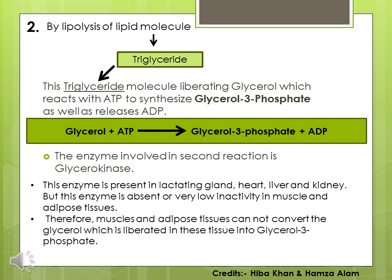The second way by which glycerol 3-phosphate is synthesized is basically from the lipolysis of a lipid molecule or triglyceride, which liberates glycerol. That glycerol will react with ATP to synthesize glycerol 3-phosphate and also release ADP. The enzyme involved in this reaction is glycerol kinase, while in the first step the enzyme involved is glycerol 3-phosphate dehydrogenase.